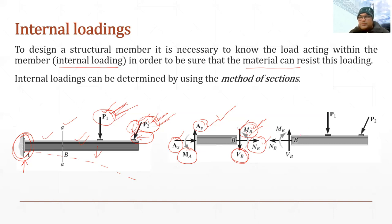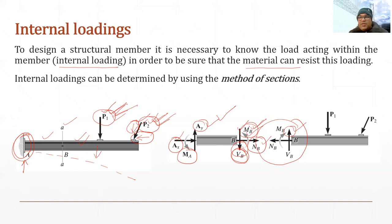Similarly, if we take the right-hand side part, we can also represent the internal loading. Please remember that the sign convention we use — if we take the left-hand side part, Newton's third law will be followed because we are just visualizing the internal loading. So if VB on the left-hand side part is downward, then on the right-hand side part it will be vertically upward. Similarly, if MB here is anticlockwise, then on the right-hand side it will be clockwise, because they counter each other. So Newton's third law is followed here. These internal loadings — M, N, and V — can be calculated using the method of sections.